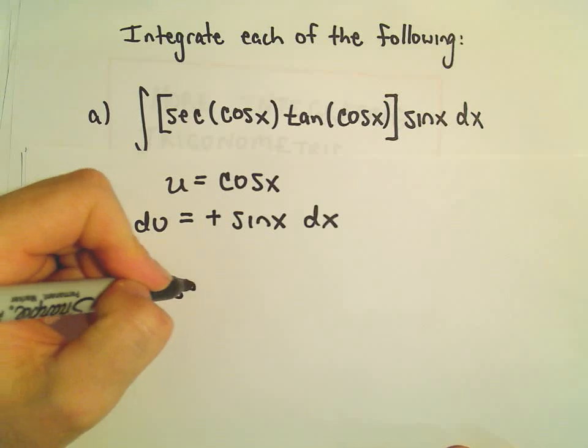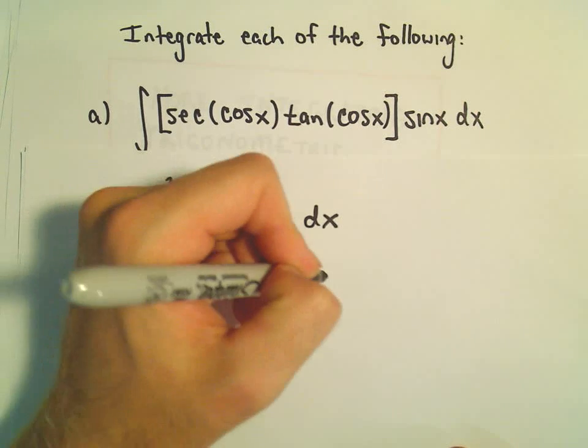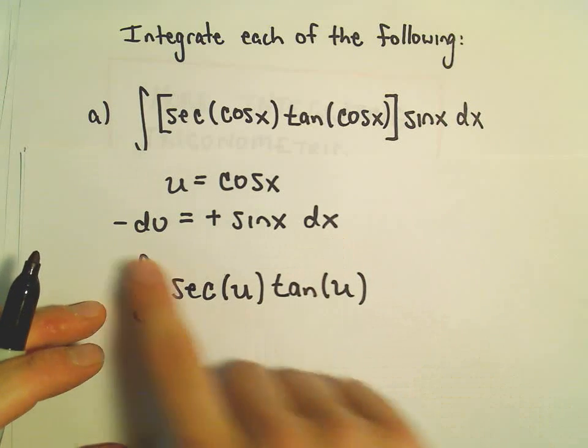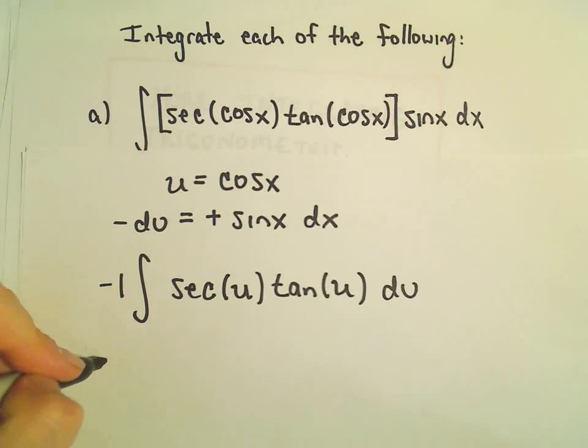We would have secant of u times tangent of u, and then our sine x dx, we can replace all of that with our negative 1 du.